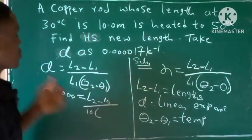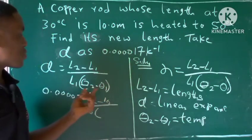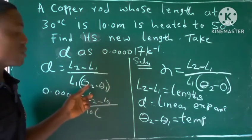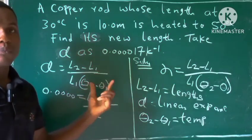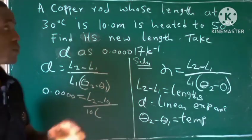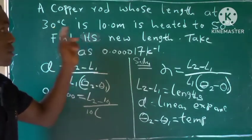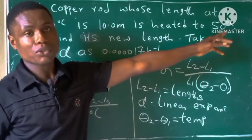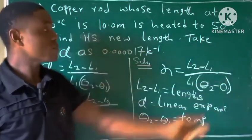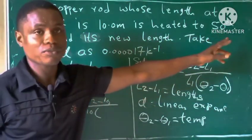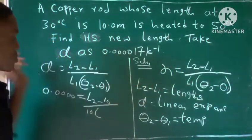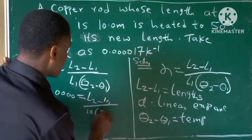We have theta 2 minus theta 1, meaning the second temperature minus the first temperature. This is the first temperature, the 30 degrees Celsius, and this is the second temperature, the 50 degrees Celsius. So you will minus 30 from 50, so 50 minus 30 is 20.